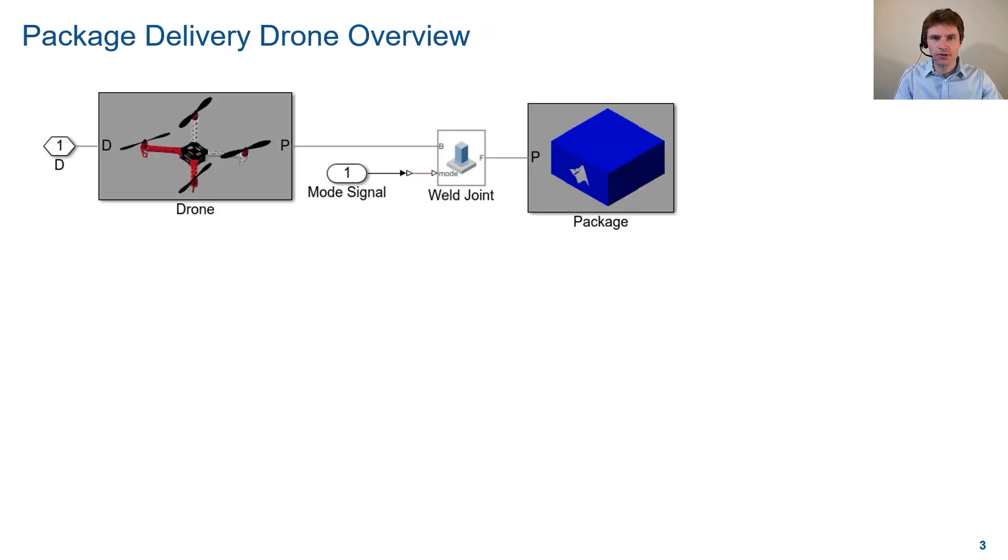Variable mode joints are easy to use. Let's use a simple package delivery drone as an example. The package is connected to the drone via a weld joint and the mode of the joint is provided by input. You simply change the value of the signal to request a mode change and Simscape Multibody does the rest.